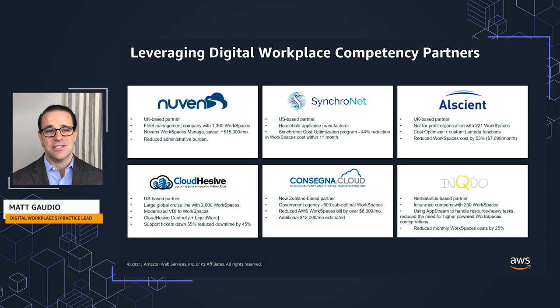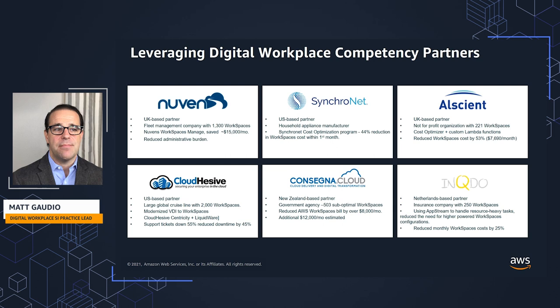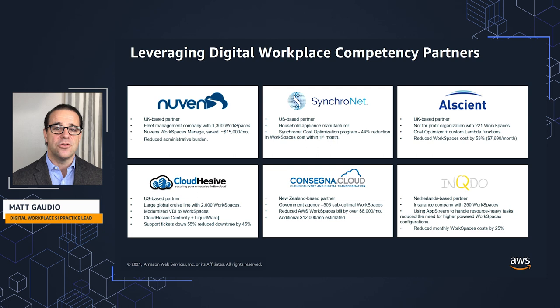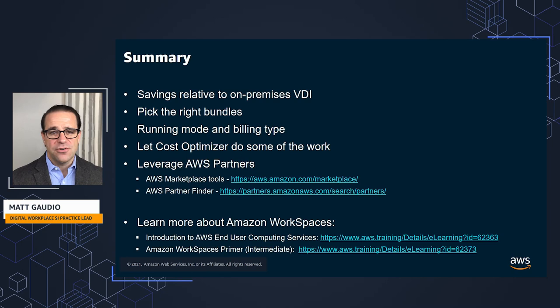Finally, Enkudo worked with an insurance industry customer to deploy 250 workspaces. By analyzing how they used applications, they found that certain resource-heavy application tasks were causing users to need too high-powered a workspace bundle. By moving those high-compute workloads to AppStream 2.0 — another end user computing service — and connecting those AppStream-presented applications into the WorkSpaces environment, they were able to scale down workspaces bundles and save about 25% off their WorkSpaces cost.